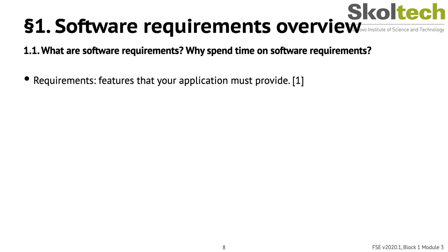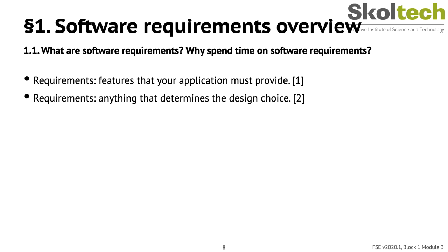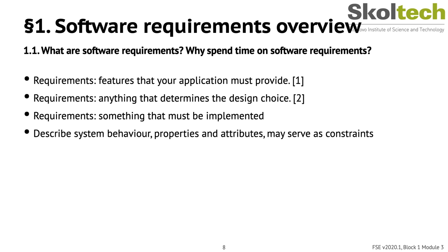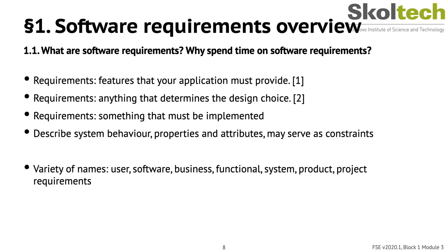Requirements help you answer questions about features that your application must provide. More broadly, they are defined as anything that determines your design choices. Simply put, requirements say what should be implemented and describe system behavior, properties, and attributes. They come in a variety of names: user, software, business, functional, product, or project requirements. Most have similar meaning, but some differ — for instance, project requirements target your processes, not the end system.